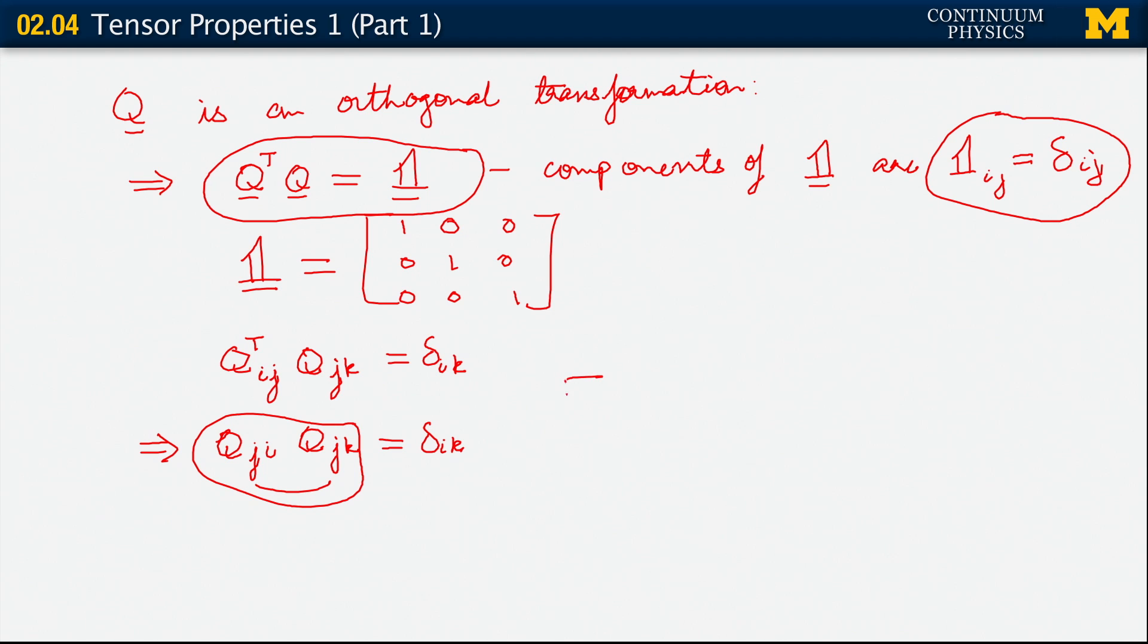In general, what we are going to do through our development of continuum mechanics is that, whenever we see the transpose of a tensor appearing, we are going to invoke the fact that we can write the components of the transpose of a tensor in terms of the components of the original tensor itself using that sort of a relation.